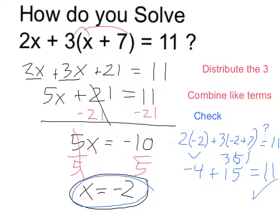So remember, I distributed first, distributed the 3, combined like terms to simplify. I solved it as a two-step equation, subtracting 21, then dividing by 5, and I arrived at my solution, x equals negative 2. Thank you.